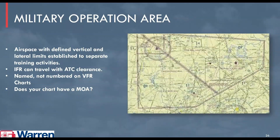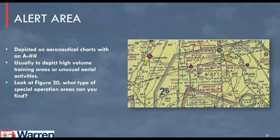Military operation areas are also very well pronounced on sectional charts, with contact information available online or on your sectional chart. These are airspace with defined vertical and lateral limits established to separate specific military training activities. Those flying under instrument flight rules can travel through with ATC clearance. They are often named but not numbered on visual flight rule charts.